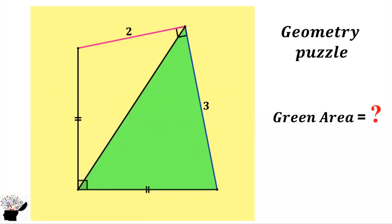Welcome to my YouTube channel. Let's consider this geometric puzzle — we are supposed to find the area of the green triangle. The length of this side is 2, and the length of this side is also 2, and this length turns out the same. How can we solve this geometric puzzle?